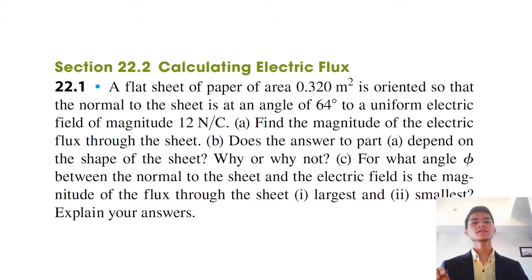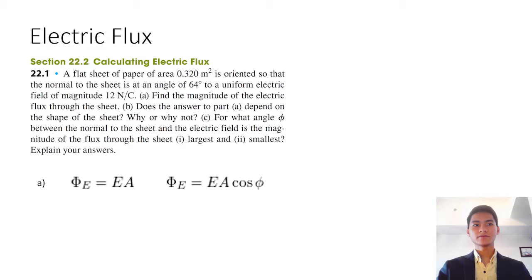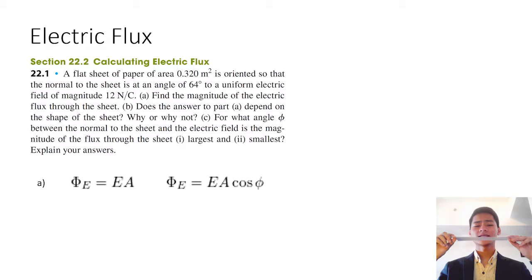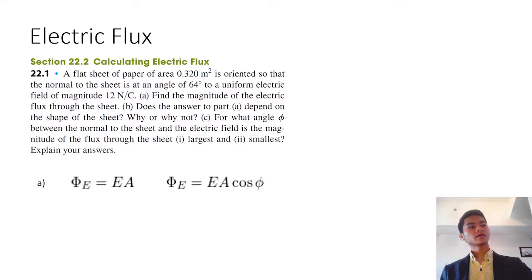Electric flux is defined by the electric field multiplied by the area of the surface. That equation applies when the sheet itself, or the plane, is perpendicular to the electric field. The general equation is EA cosine phi.